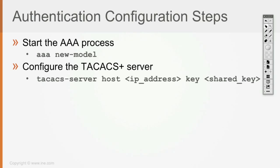In most IOS code, if you don't enable AAA, the router will not allow you to configure the TACACS server or the RADIUS server. Because by default the code runs in the AAA old model, which means for authentication purposes you cannot use TACACS or RADIUS — you can only use local authentication. So the command makes sense: it's going to be 'aaa new-model'.